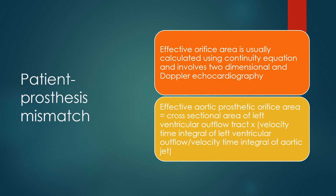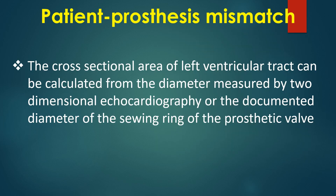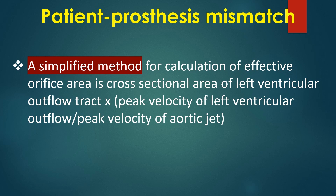Effective orifice area is usually calculated using the continuity equation with two-dimensional and Doppler echocardiography. Effective prosthetic orifice area equals cross-sectional area of the LVOT × velocity time integral of the LVOT divided by velocity time integral of the aortic jet. A simplified method uses cross-sectional area of LVOT × peak velocity of LVOT divided by peak velocity of the aortic jet. The cross-sectional area of the LVOT can be calculated from the diameter measured by 2D echo or from the documented diameter of the sewing ring of the prosthetic valve.